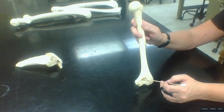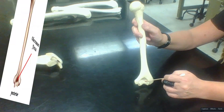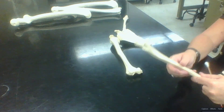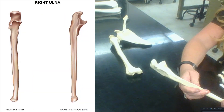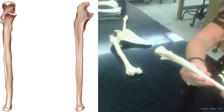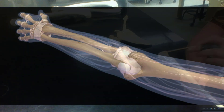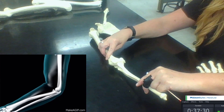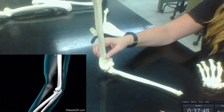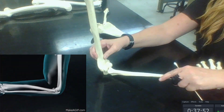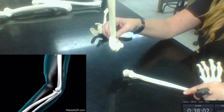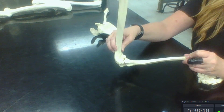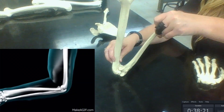Flipping to the posterior aspect reveals the olecranon fossa. The ulna somewhat makes a U shape, and that U shape forms what we colloquially call the elbow. The proximal portion of the ulna sits on the posterior aspect of the humerus and rocks back and forth along the trochlea. This portion of the ulna is called the trochlear notch because it articulates with the trochlea.